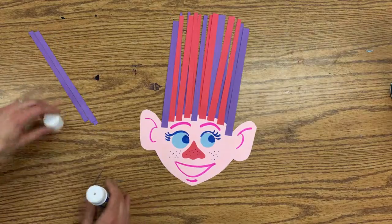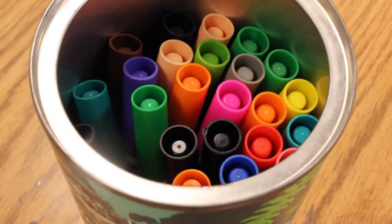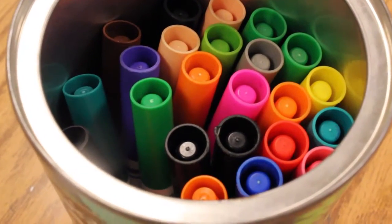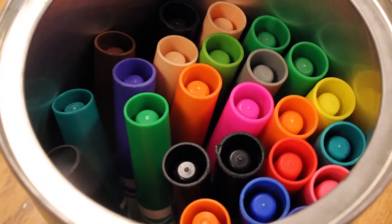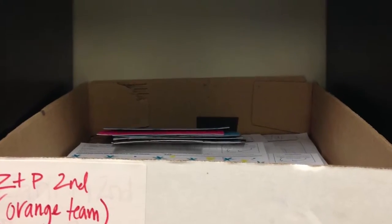So there's our troll head. Make sure you put your lid back on your glue. And when you put your markers away, put all the colored lids up at the top so everybody knows what color is in there. And put your scraps in the recycling bin. Put your troll in the class cubby.